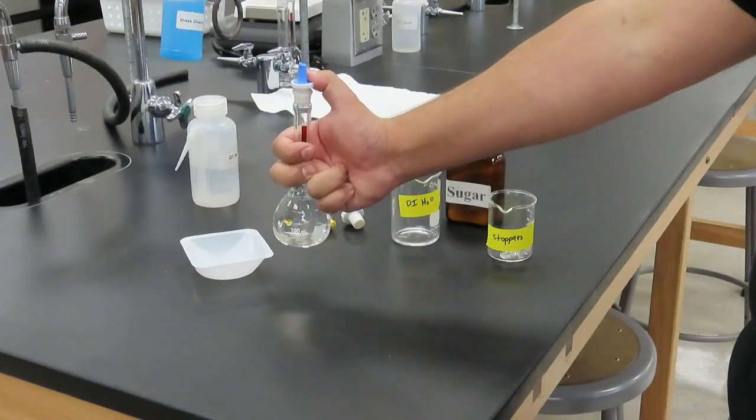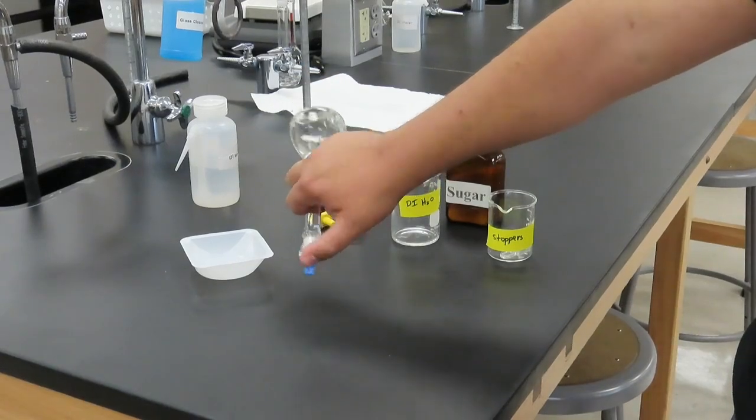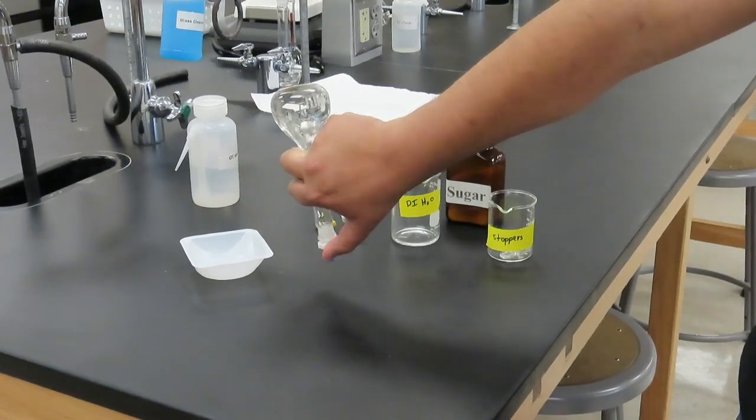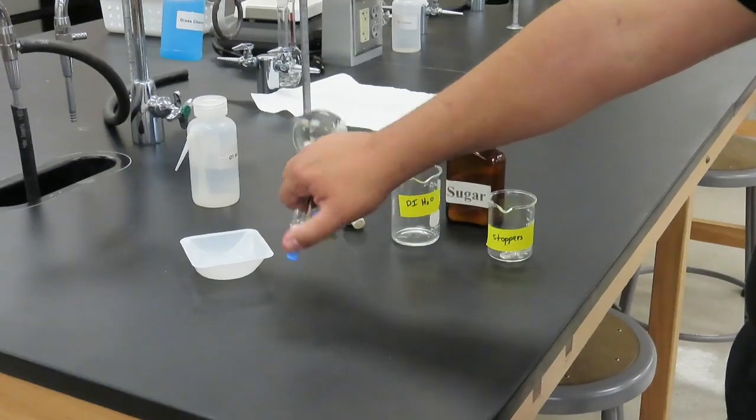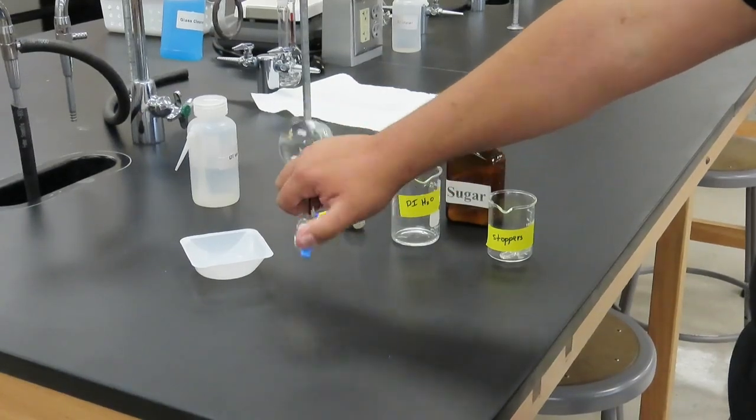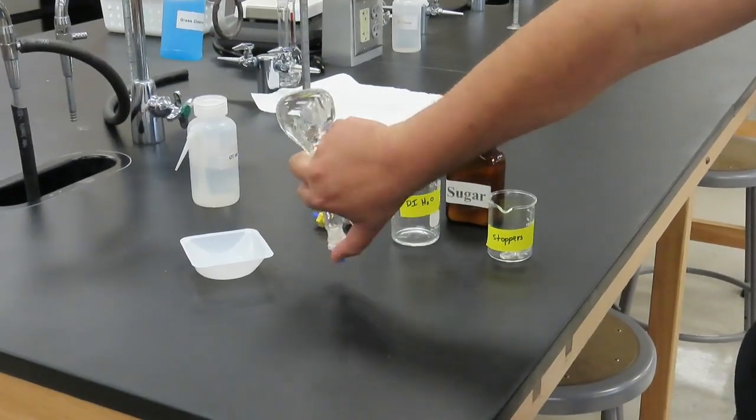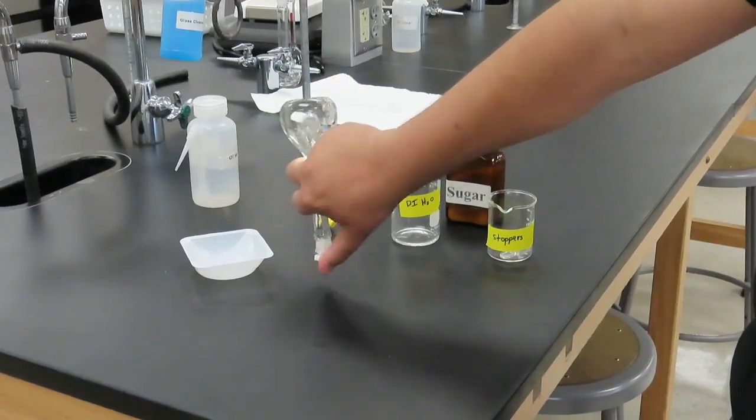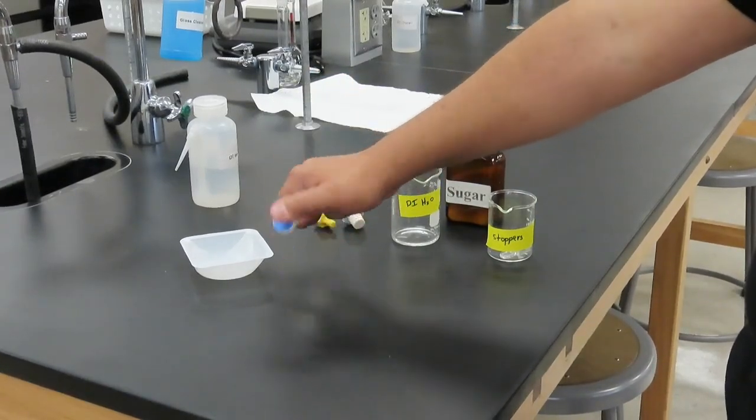Then you'll be sure to cap the solution in the volumetric flask and rotate it around 25 to 30 times to make sure that it is completely and thoroughly mixed. Although this is sped up, be sure to do it slowly.